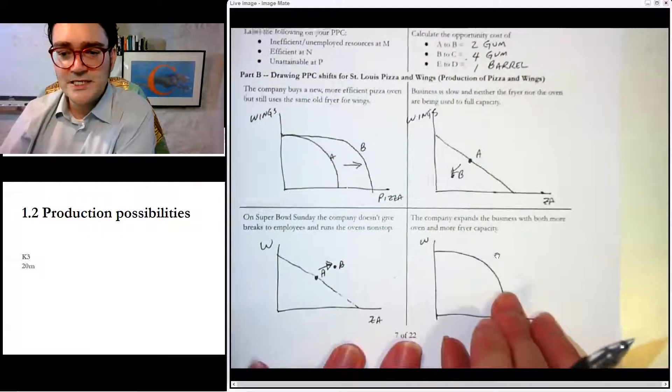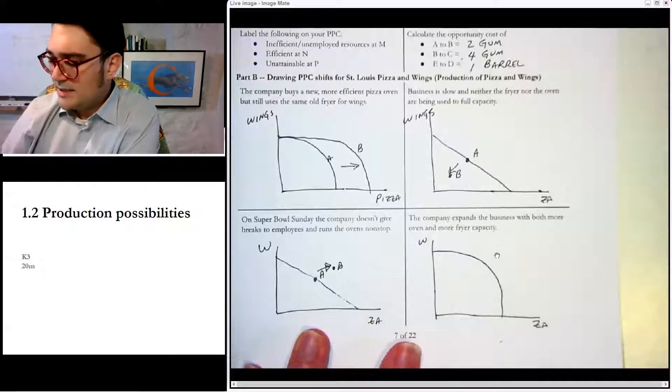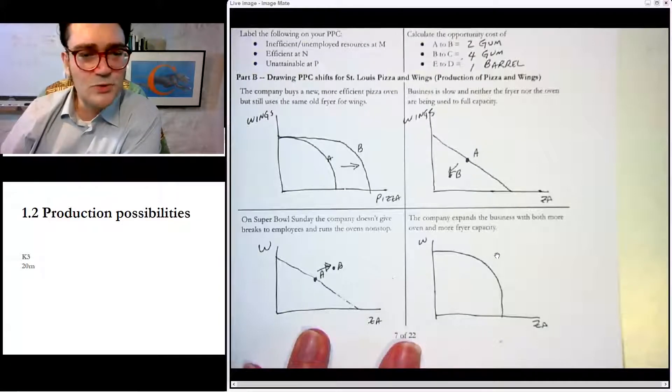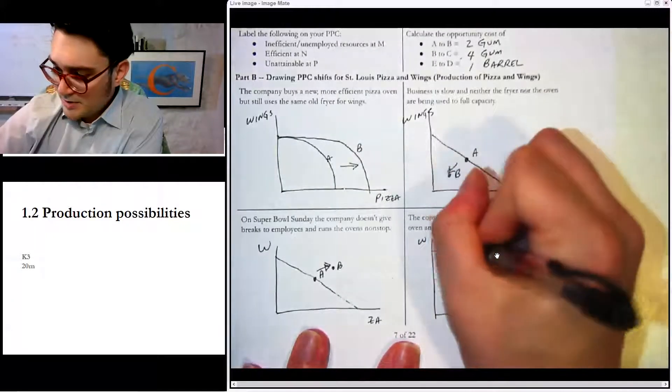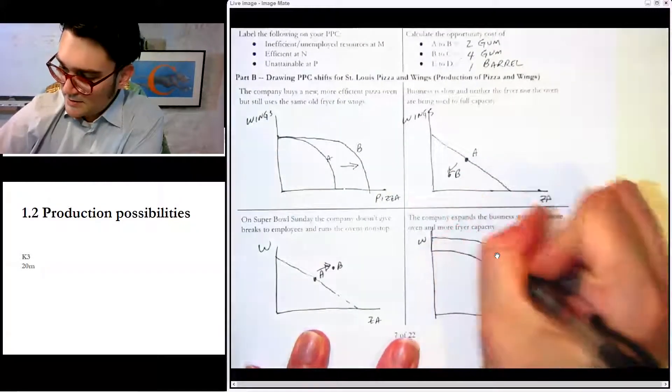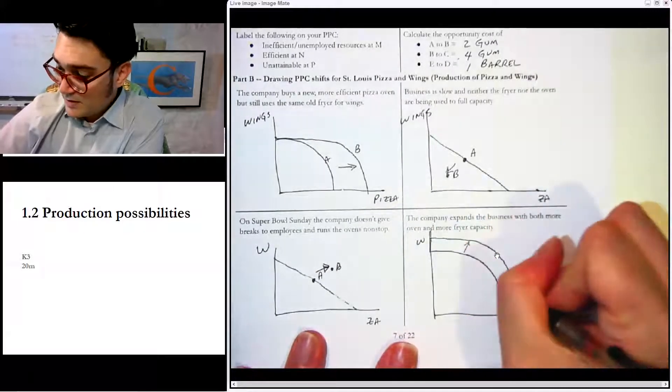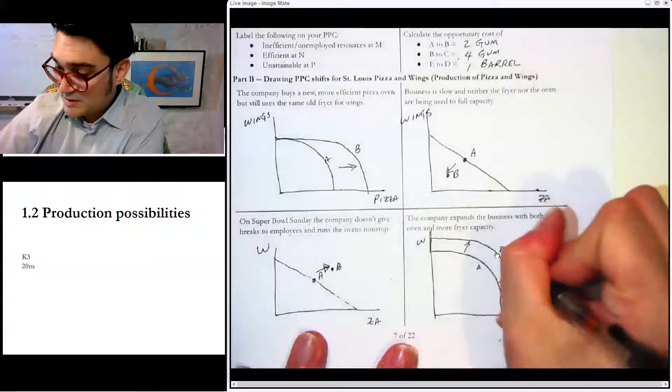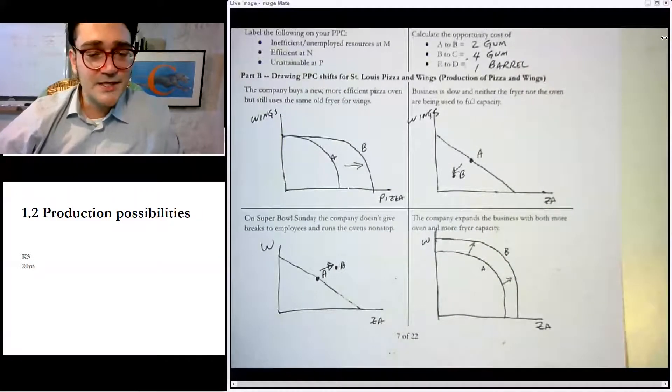Now, the last one, the company expands their business with both more oven and more fryer capacity. Now, with this one, I've kind of screwed up my drawing already because I didn't really leave myself enough room to draw the shift outward, but I'll kind of try here. And so it's going to shift out for both of them. So we go from curve A to curve B. So hopefully you got it. I'll see you in class. Take care.